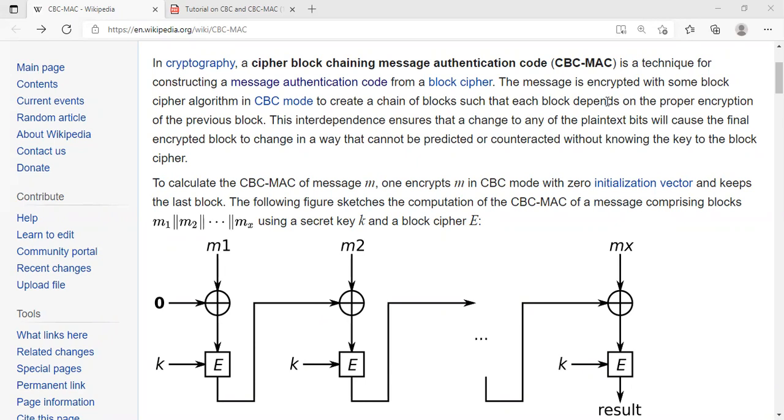Suppose you are Alice and you want to send a message to Bob. You both agreed on a common key K. Using a MAC, you will sign, basically, your message so that Bob can verify whether it has come from you, meaning the one who knows the key K. That's basically what MAC is. So you have two sites who want to communicate securely, but want to make sure that the message is coming from person who has the same key K as the recipient. That is the whole purpose of a MAC.